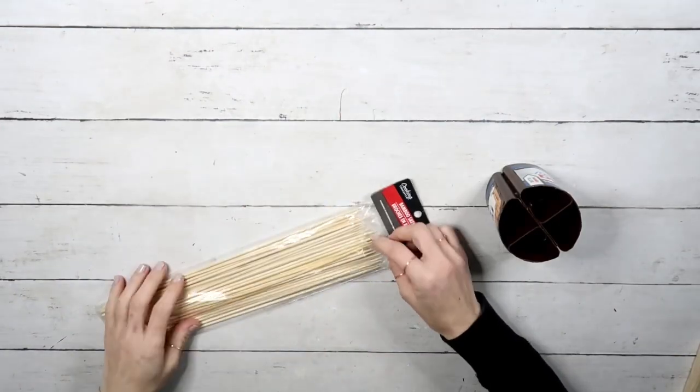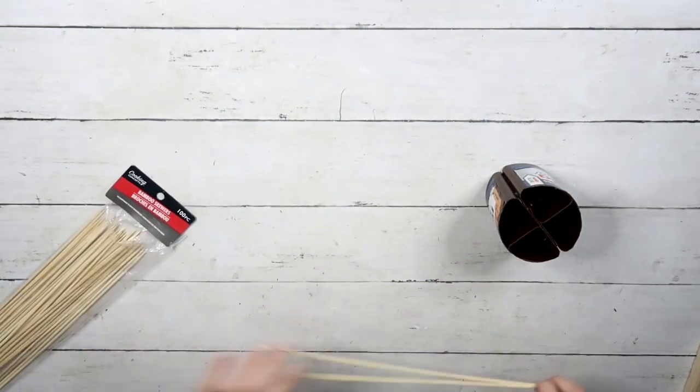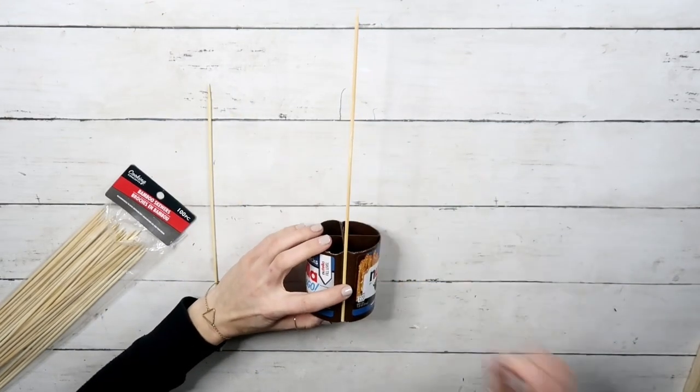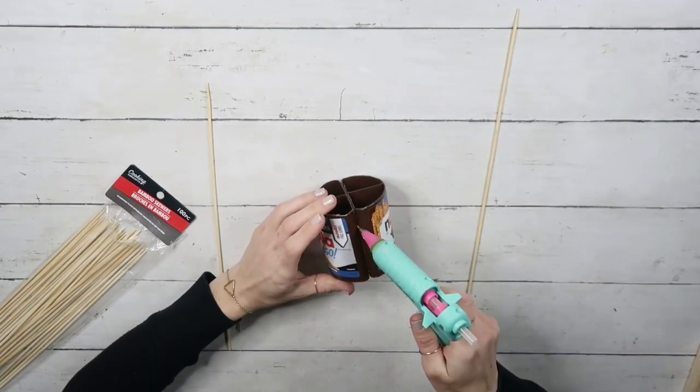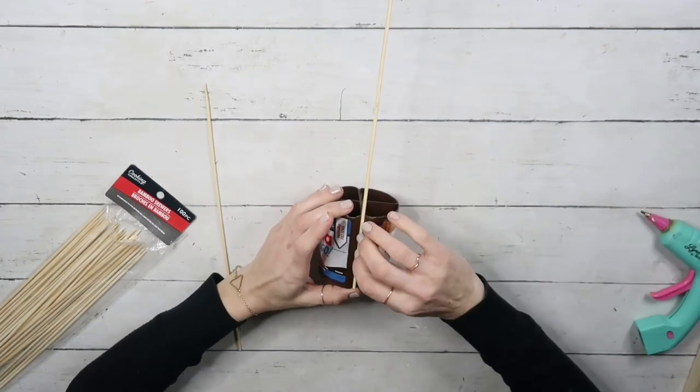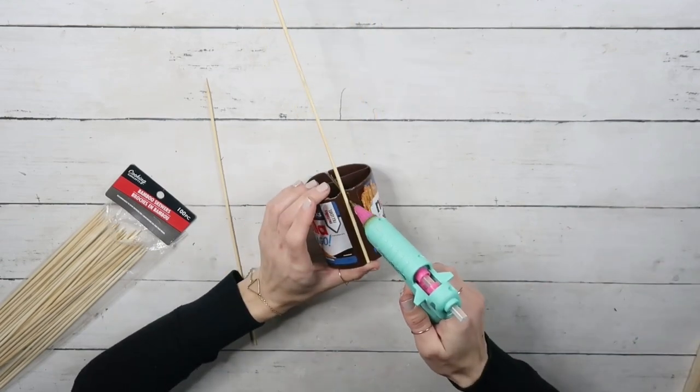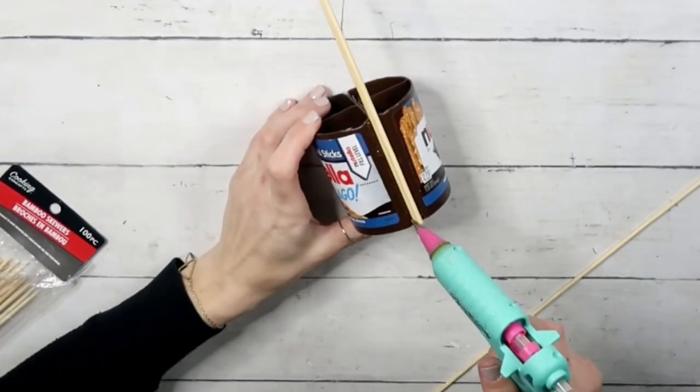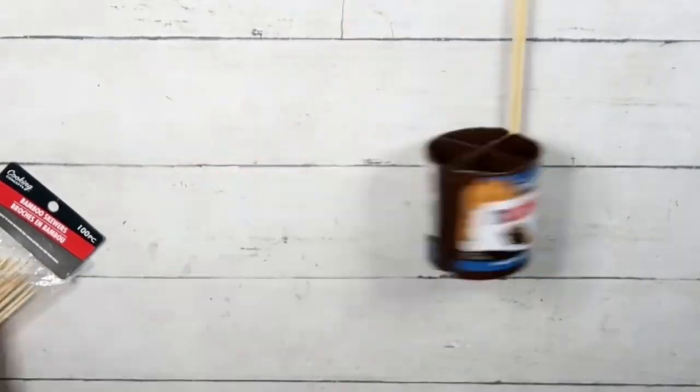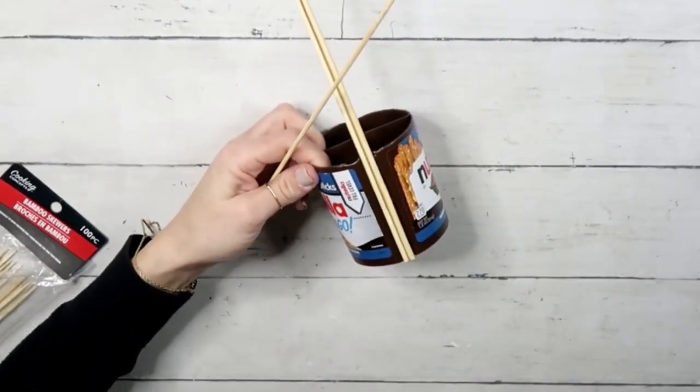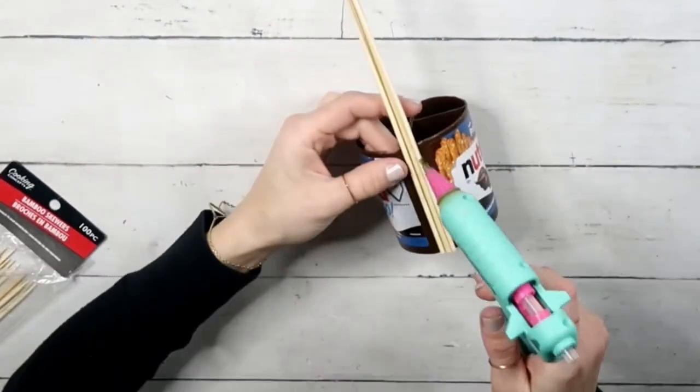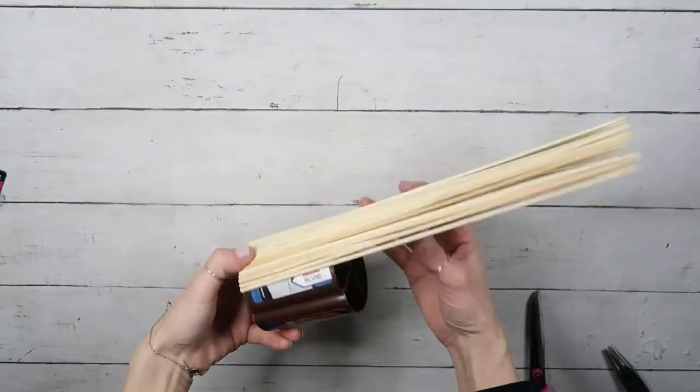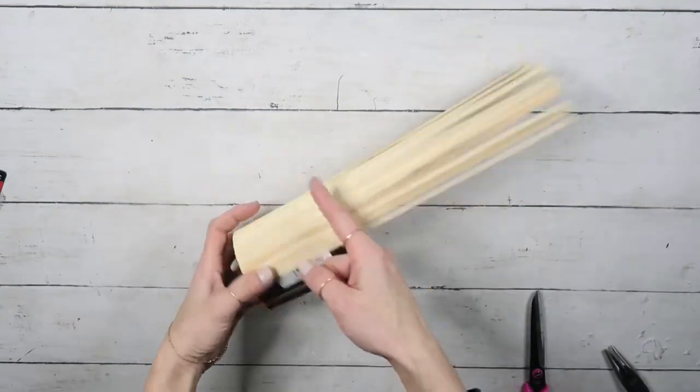Now I'm going to hot glue these two together on the flat side. Next thing I'm going to take the bamboo skewers from the Dollar Tree and I will hot glue them around these two containers. The first one I'm going to hot glue right where the two containers meet, so there's a little indentation, and then start going all the way around.